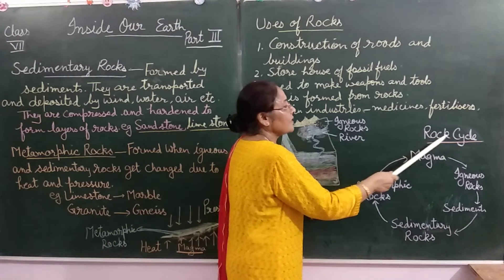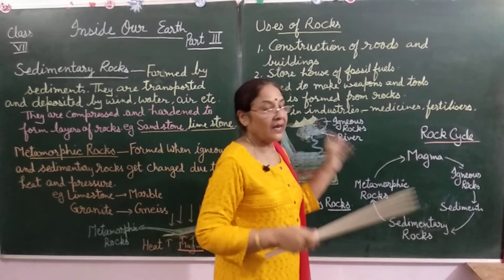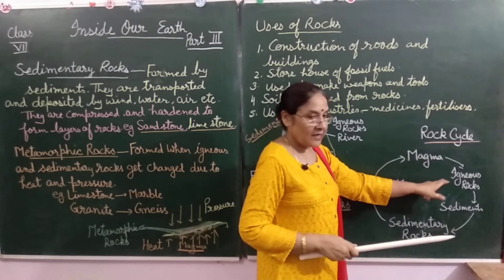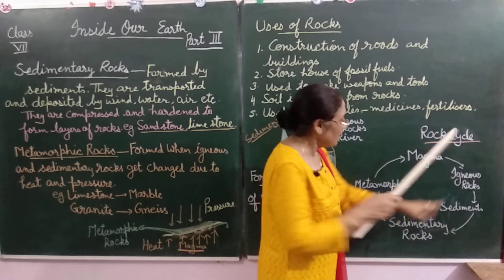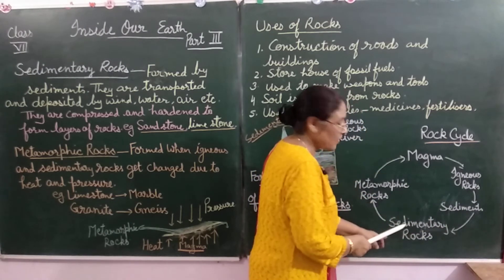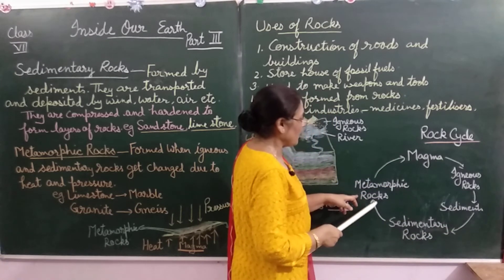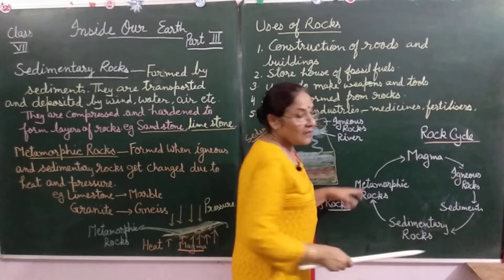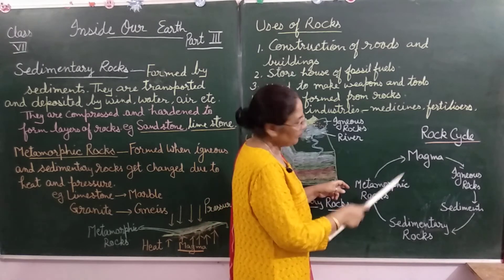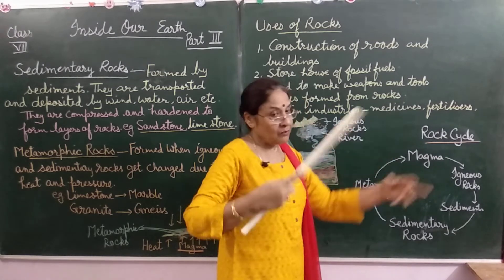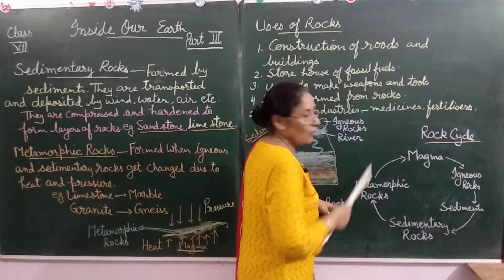The rock cycle: magma cools on the earth's surface to form igneous rocks. Igneous rocks are converted into sediments through weathering and erosion, and sediments form sedimentary rocks. Sedimentary and igneous rocks, under great heat and pressure, change their form and become metamorphic rocks. With the passage of time, metamorphic rocks are converted back into magma, completing the rock cycle.